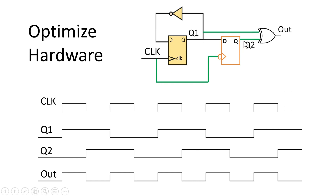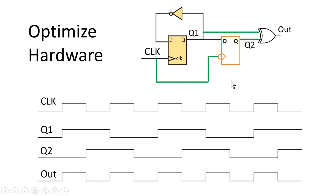q2 is the output of the negative-edge-triggered flip-flop, which captures q1 at every negative edge of the clock. XOR-ing q1 and q2 produces the expected output signal, which is just similar to the clock signal. In this optimized solution, we have eliminated one NOT gate, reducing the hardware area.